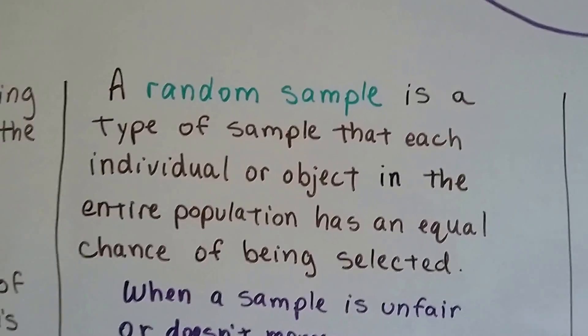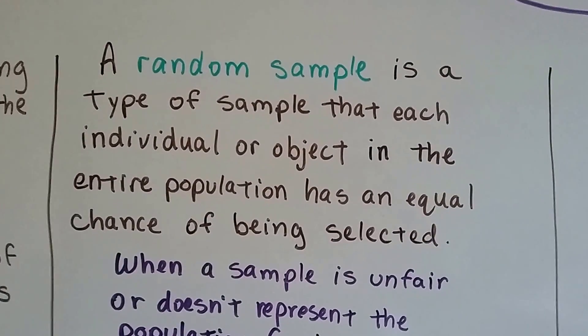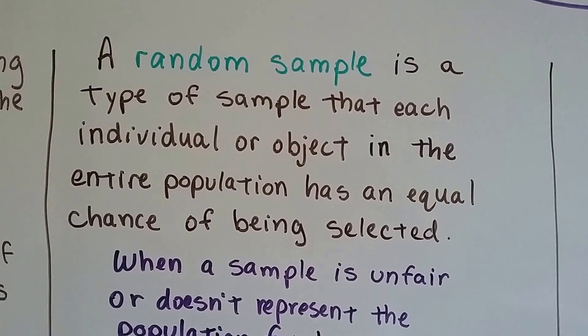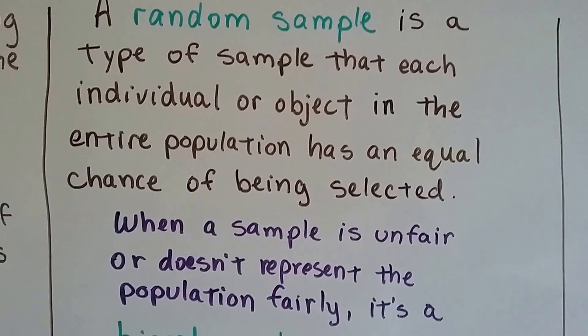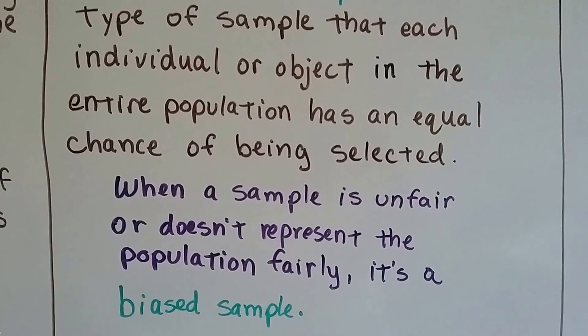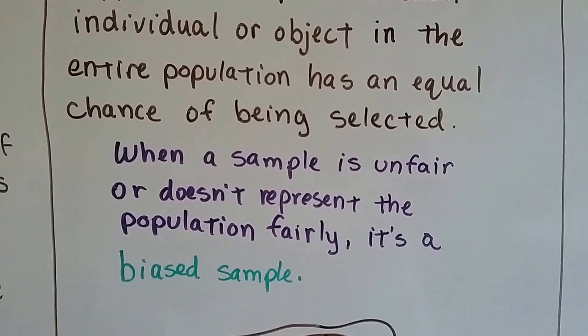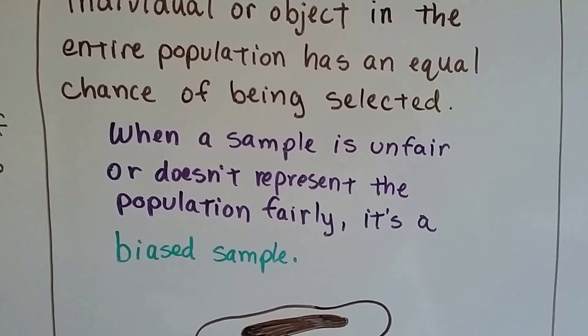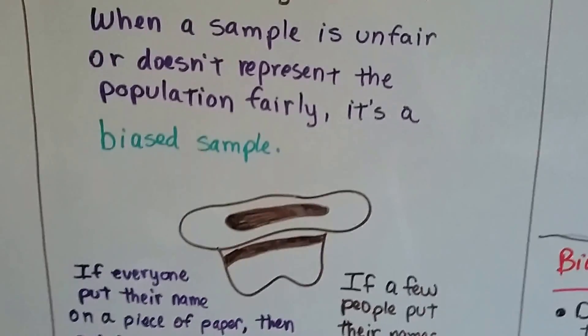A random sample is a type of sample where each individual or object in the entire population has an equal chance of being selected. When a sample is unfair or doesn't represent the population fairly, it's a biased sample.